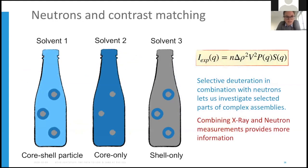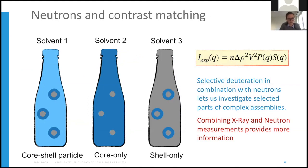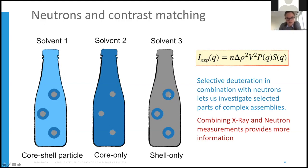A quick recap on contrast matching. Each component in your system — defined by its molecular formula and density — has a different scattering length density. Consider a core-shell particle: the core, shell, and solvent each have different scattering length densities. Using selective deuteration, we can tune the solvent's scattering length density to match one component. For example, matching the solvent SLD to the shell makes only the core visible to neutrons, or matching it to the core makes only the shell visible. This allows us to investigate selective parts of complex assemblies.